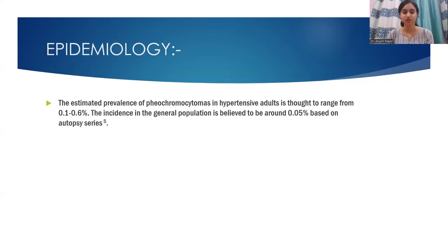Epidemiology: The estimated prevalence of Pheochromocytomas in hypertensive adults is thought to range from 0.1 to 0.6%. The incidence in the general population is believed to be around 0.05%, based on autopsy series.